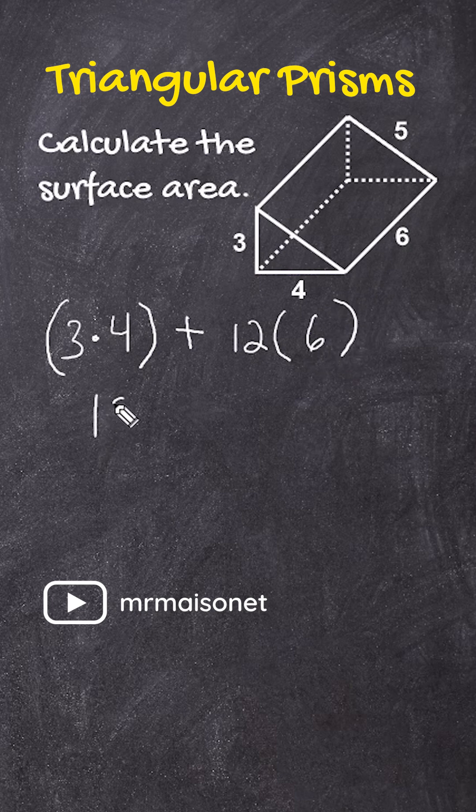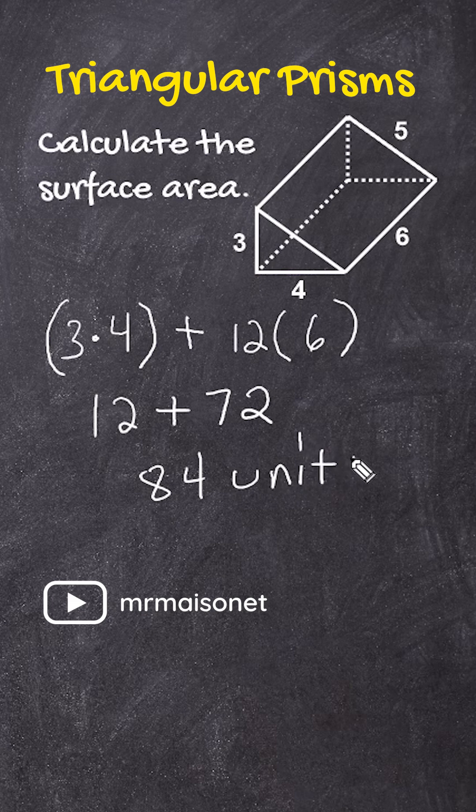So that gives us 12 plus 72 for a total of 84. And the units weren't given, so we're just going to say square units.